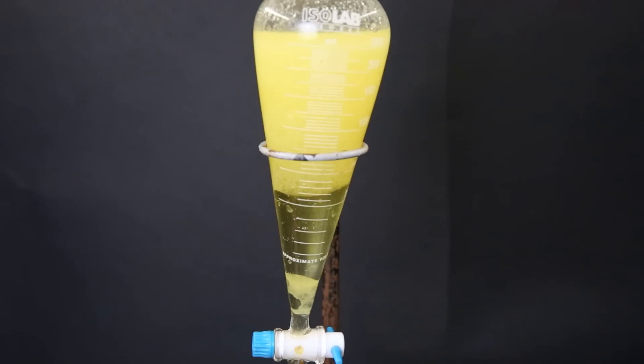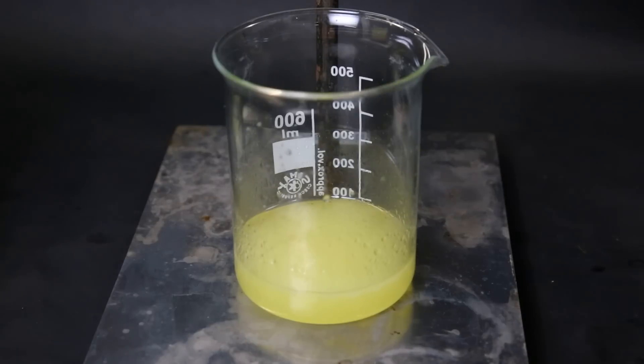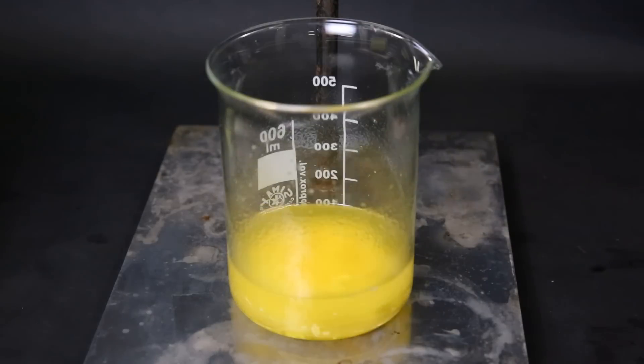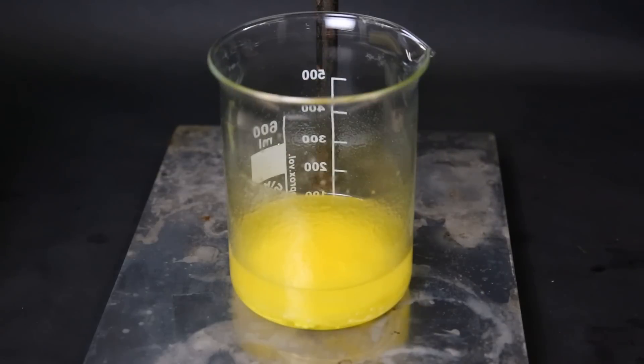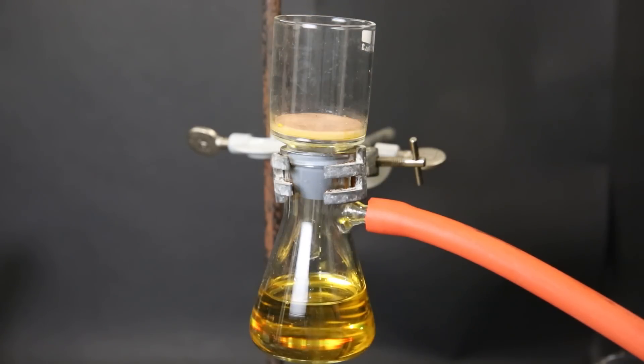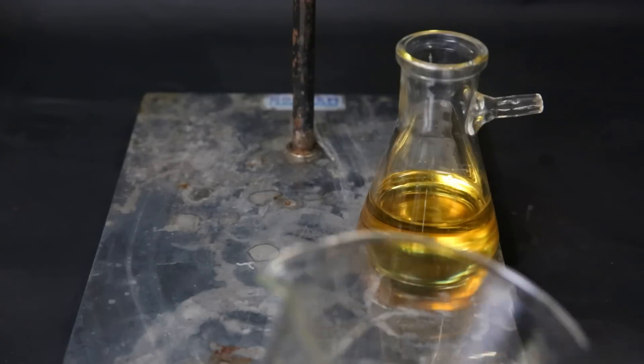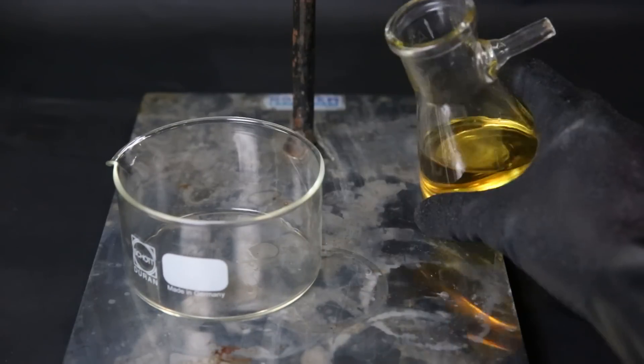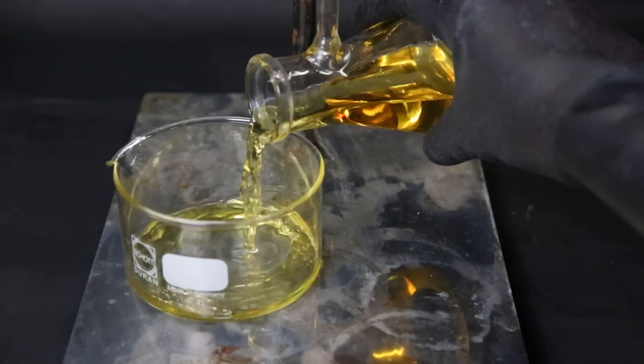I do the same with the saturated sodium chloride solution and let the layers separate again. Then I collect the washed organic layer and dump in a bunch of calcium chloride to dry it. I just let it sit for a while and then filter it with vacuum filtration. After everything has filtered through, the liquid has become clear and we can start the crystallization process.